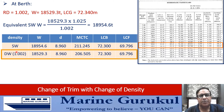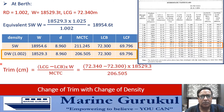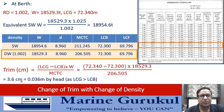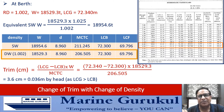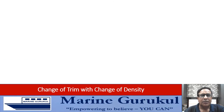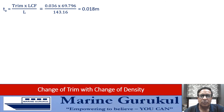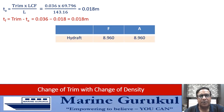So when the vessel is floating in dock water displacing 18,529.3 tons, her hydrostatic particulars are as in the highlighted box. Now knowing LCB, LCG, displacement, and MCTC, we can get the trim in dock water. Trim in dock water equals trimming moment divided by MCTC, and this trim comes to 3.6 centimeters by head — because LCG is greater than LCB.